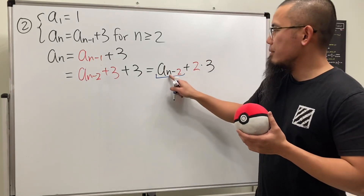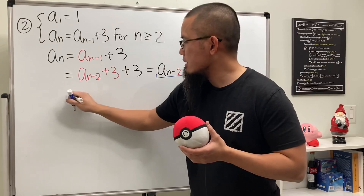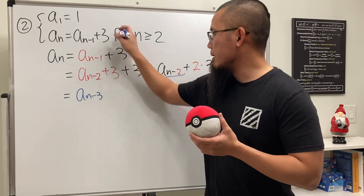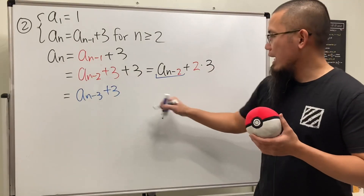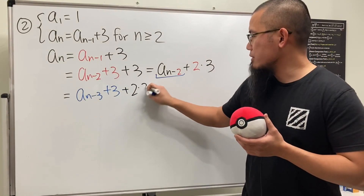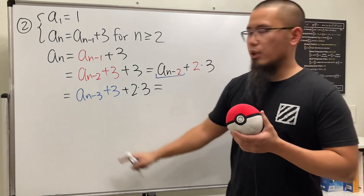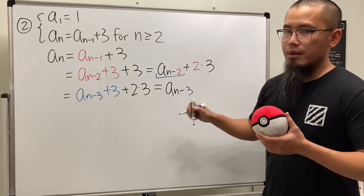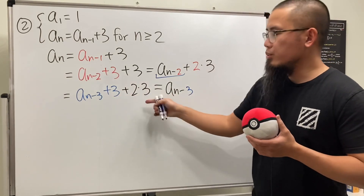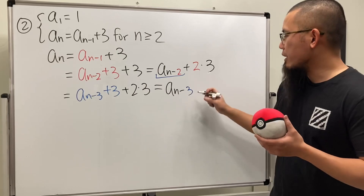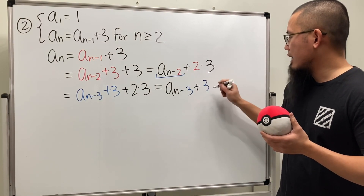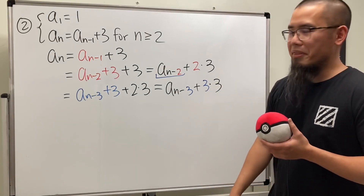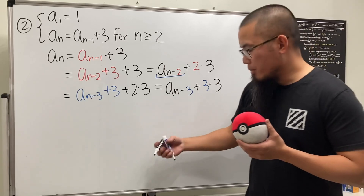Applying the rule again with n minus two, we get aₙ₋₃ + 3. Combined with the 2·3 already there, that's one three plus two threes, so three threes total: aₙ₋₃ + 3·3. And so on. Again, we need to keep going until we reach a₁.